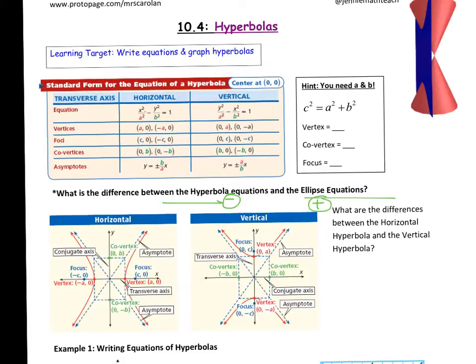With ellipses, you decided if it was vertical or horizontal depending on where the bigger number was. The bigger number was always a squared, and that told you where your major axis was — whether it was going to be horizontal or vertical.